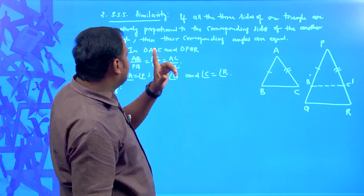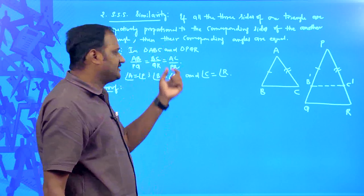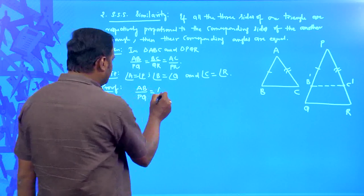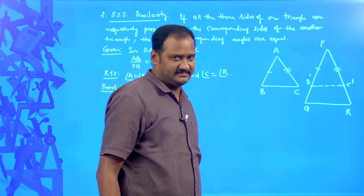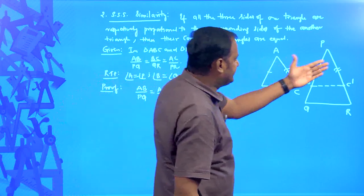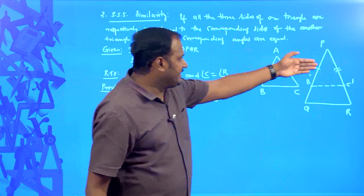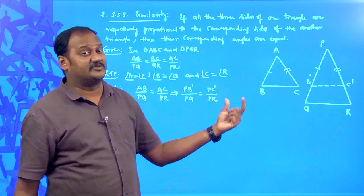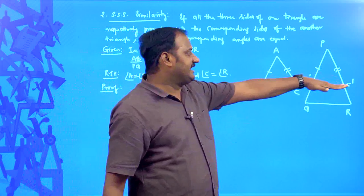Considering the information given: AB/PQ = BC/QR = AC/PR. Taking AB/PQ = AC/PR, and since AB = PB' by construction, we write PB'/PQ = PC'/PR. By the converse of the Basic Proportionality Theorem, we can say that B'C' is parallel to QR.